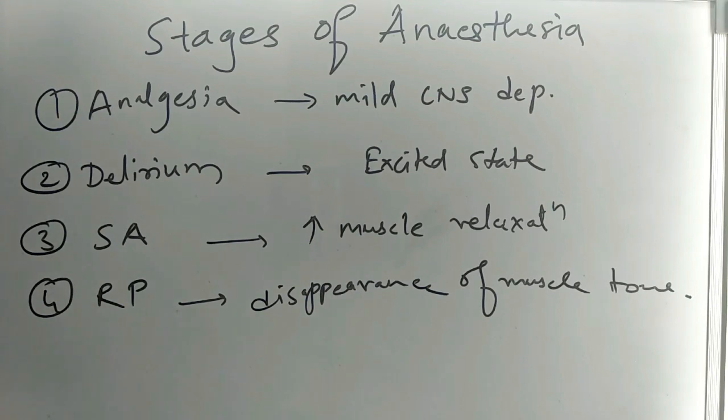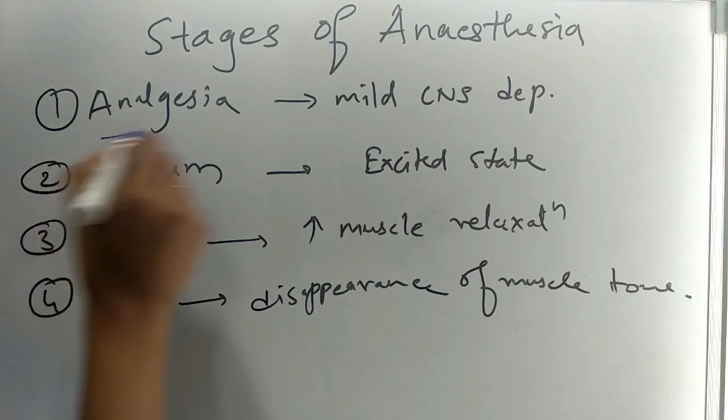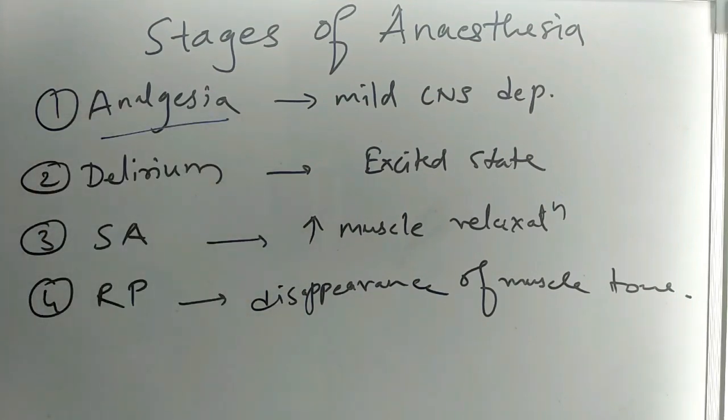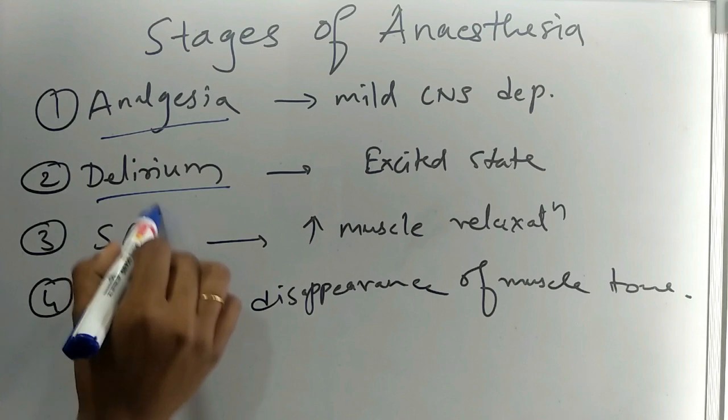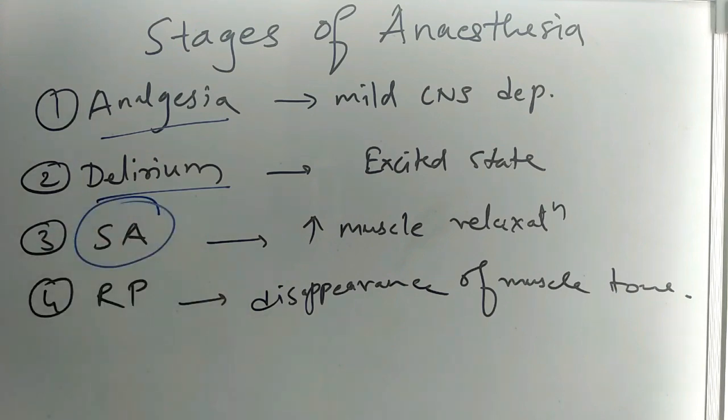Now we are going to see the stages of anesthesia. The first stage is analgesia which causes mild CNS depression. Second is delirium which causes the excited state. Third is surgical anesthesia which increases muscle relaxation. And the last stage, respiratory paralysis, causes the disappearance of muscle tone.